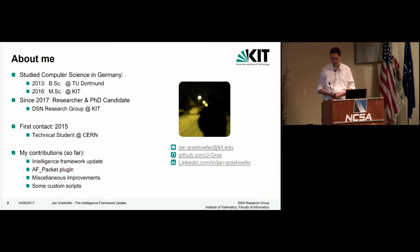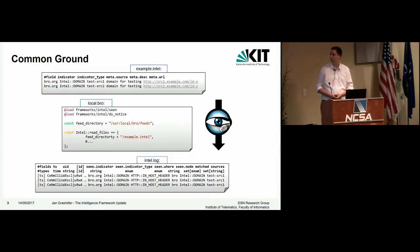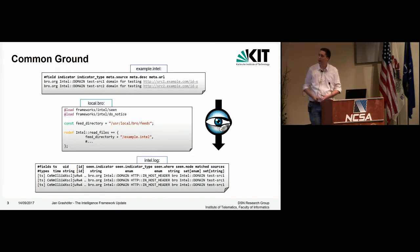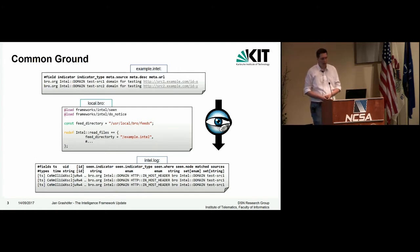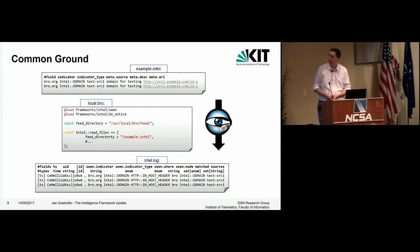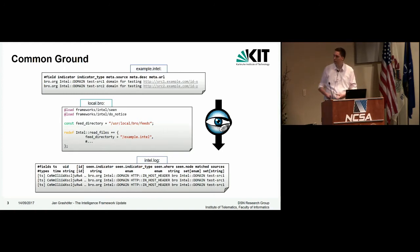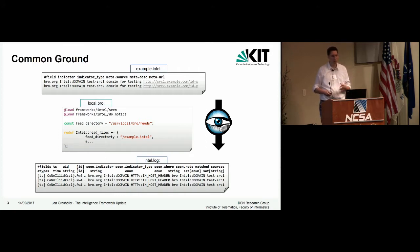For this talk I assume some common ground, so probably all of you have used the intelligence framework and know there are intelligence files with indicators — like in this case a domain, bro.org. To leverage this, you configure your local.bro to load the framework intel scene, maybe do notices, specify the file you want to load, and then Bro starts producing logs. Today I will dig a bit deeper into how Bro does this.